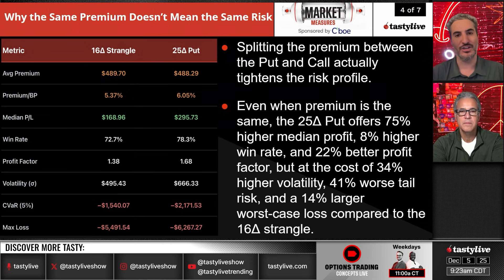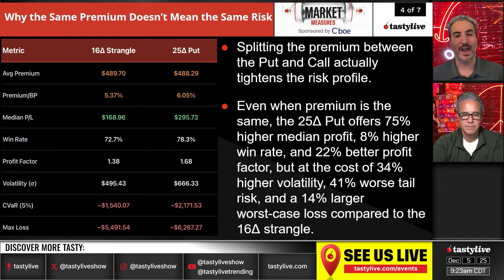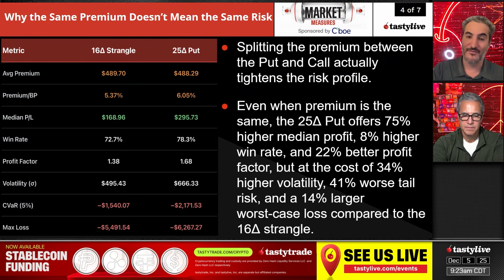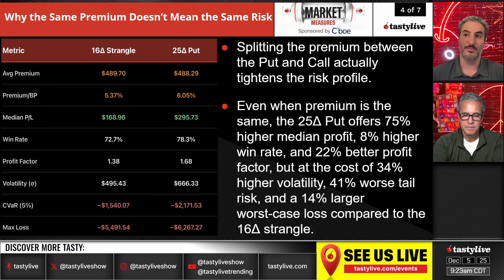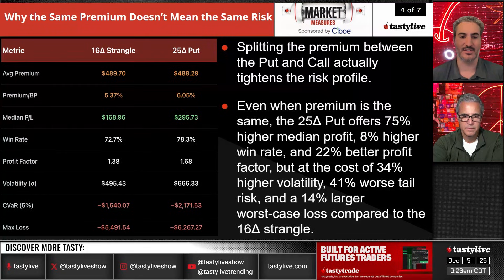But that comes at a cost of 34% higher volatility. When you are only trading on one side of the market, your volatility at any point is going to be way wider, because you don't have those occurrences where the market goes down and value comes out of your calls. You have 41% worse tail risk and a 14% larger worst case loss compared to the 16 delta strangle.